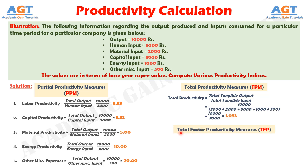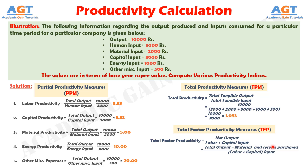Finally, let's calculate the total factor productivity. The formula of total factor productivity is net output divided by the summation of labor and capital input. Assume that the company purchases all its materials and services including energy, machine and leased equipments. In that case, the net output equals total output minus material and services purchased. Putting in the values: total output is 10,000 rupees; material and services purchased includes material input of 2,000 rupees, energy input of 1,000 rupees, and other miscellaneous inputs of 500 rupees. Dividing by the sum of labor input of 3,000 rupees plus capital input of 3,000 rupees gives us a total factor productivity of 1.0833.